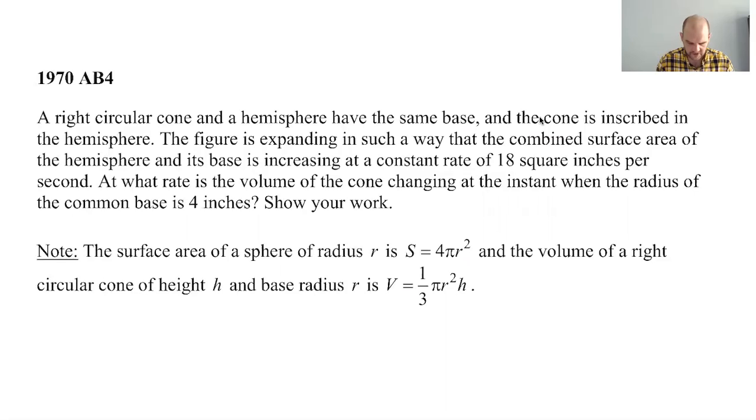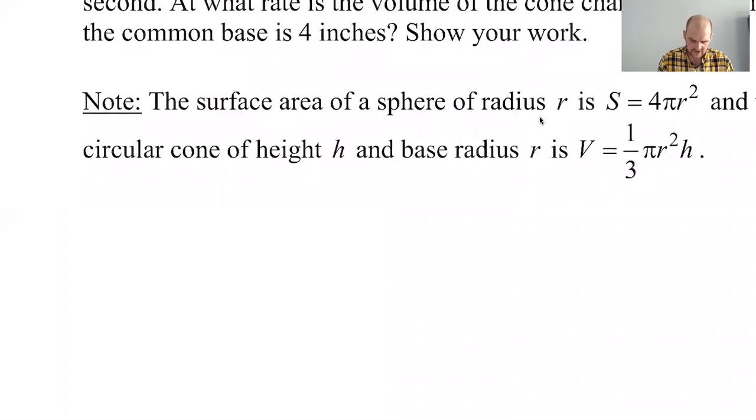A right circular cone and a hemisphere have the same base and the cone is inscribed in the hemisphere. I'm picturing - let me try to draw this. I'm picturing kind of a semicircle, but that won't quite work. I'm picturing this and then this is the cross section, which is like all I can really imagine.